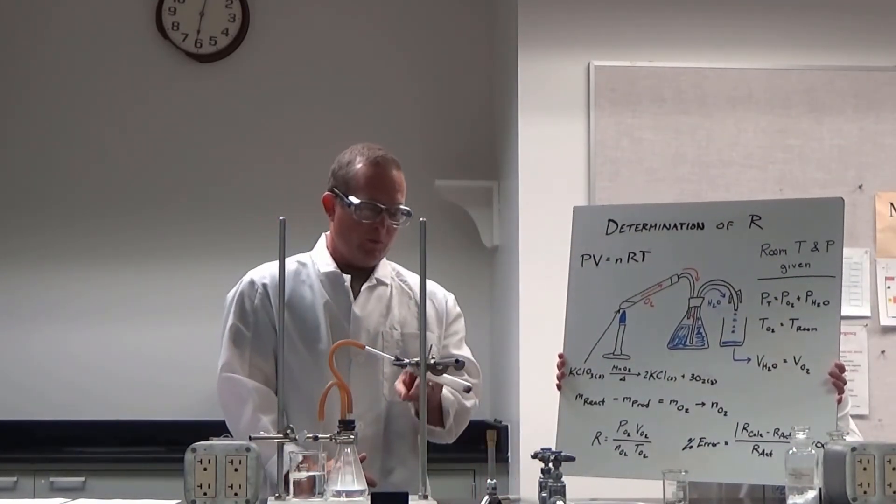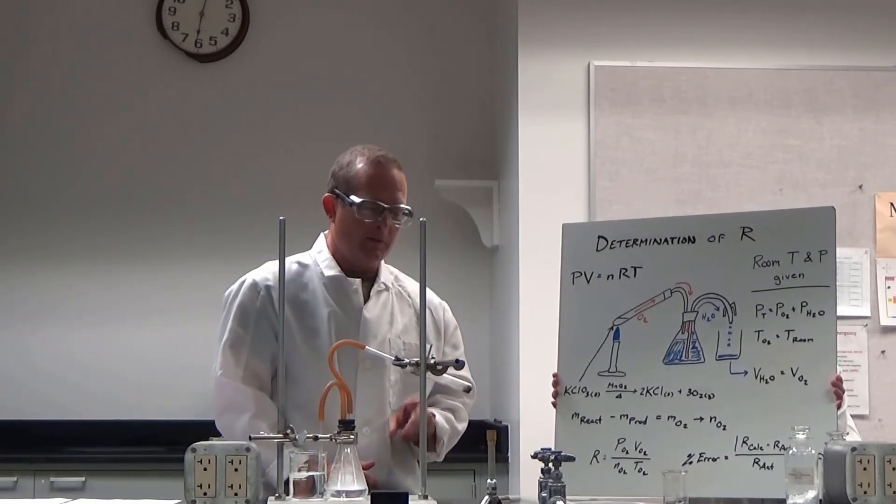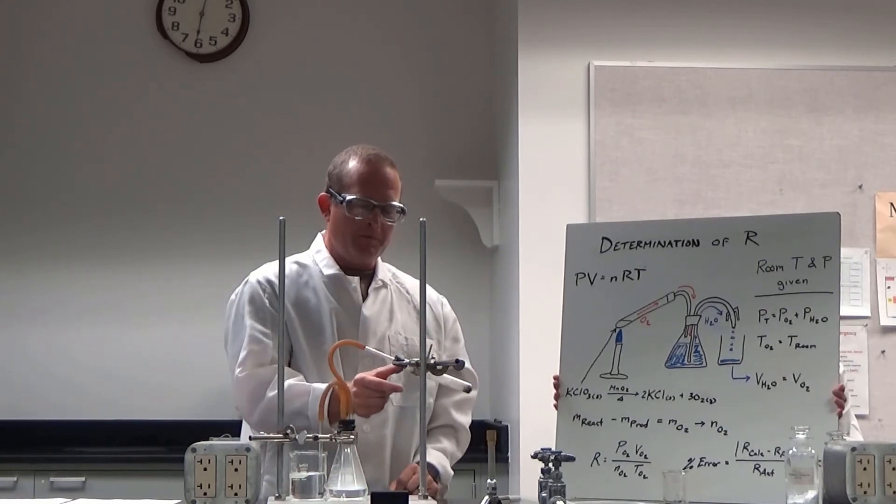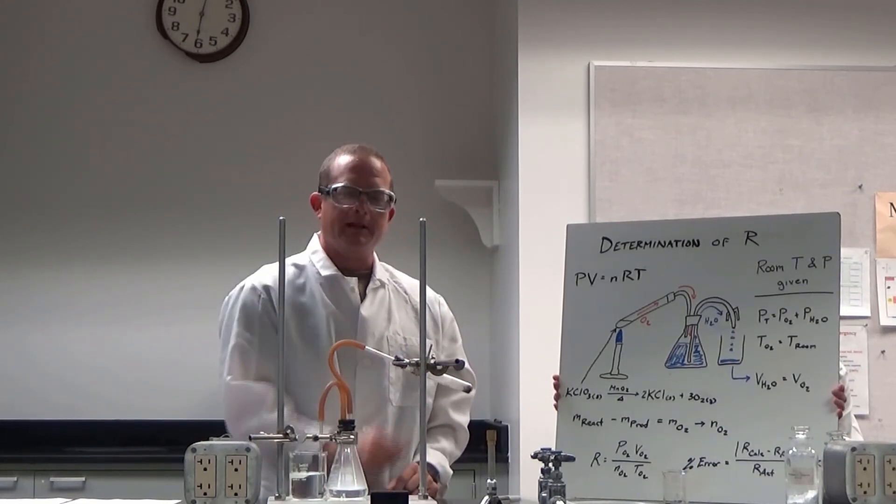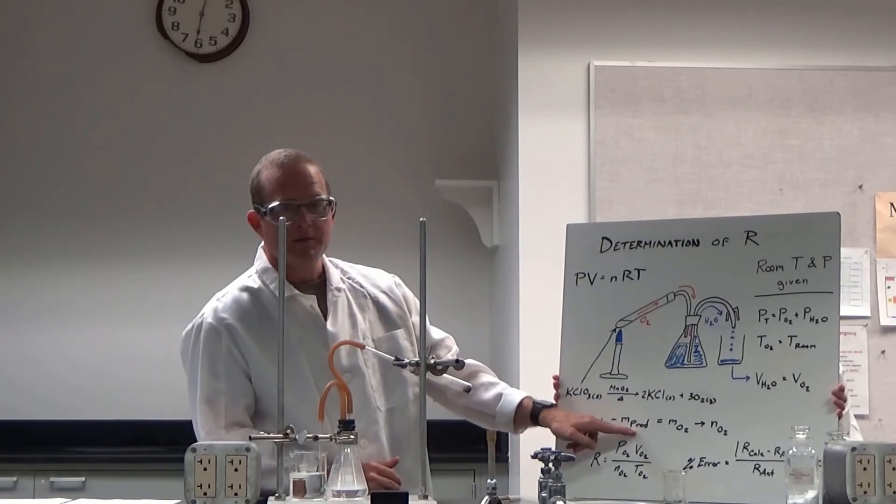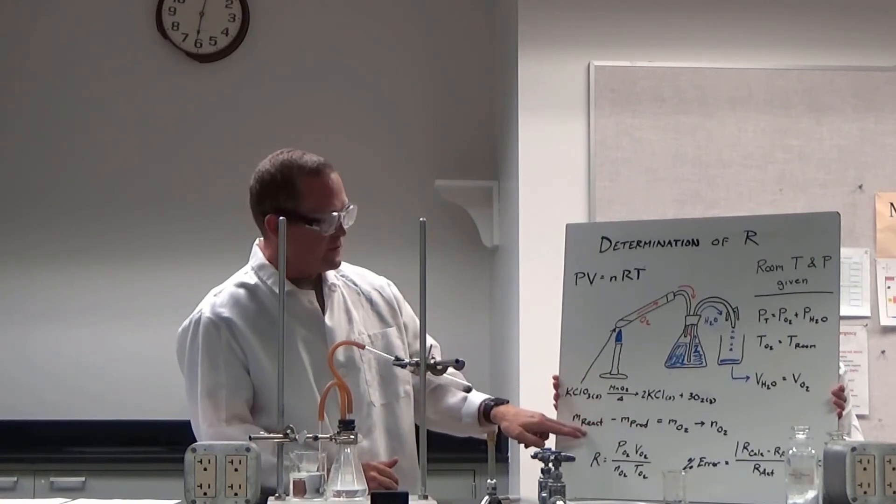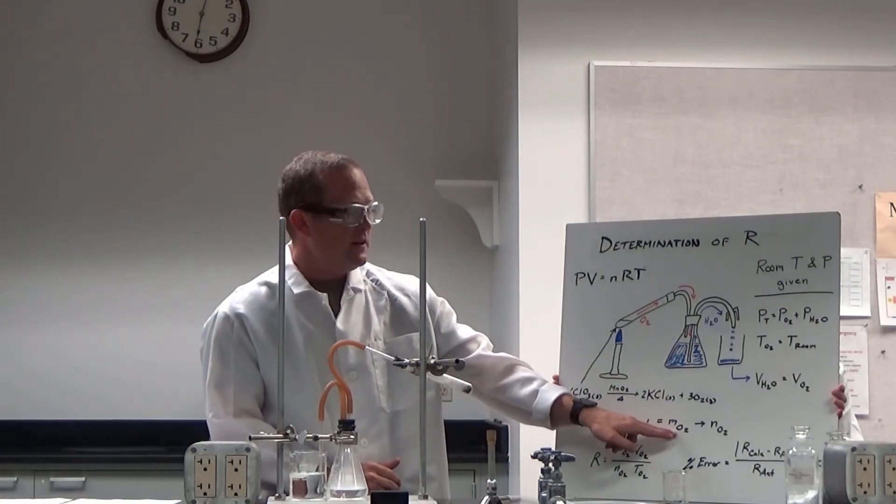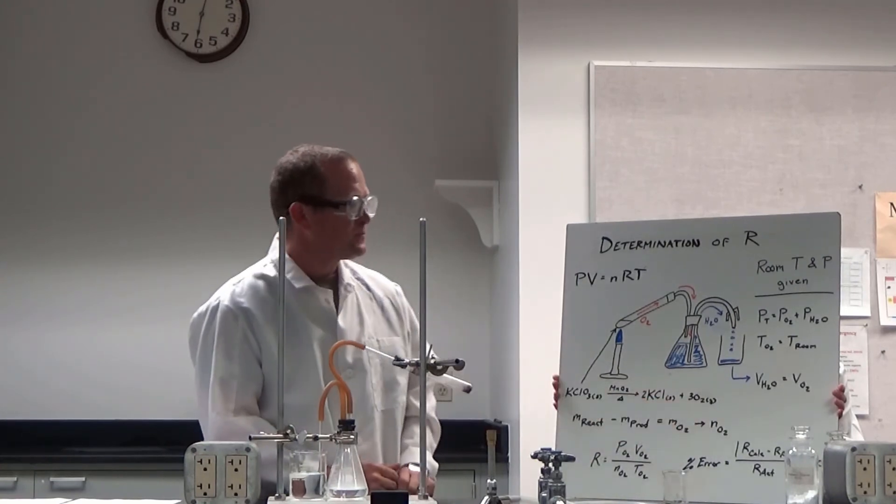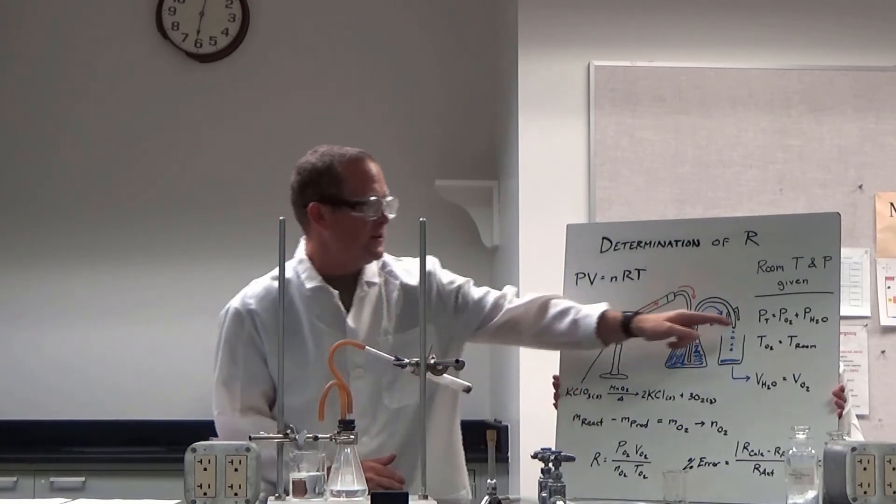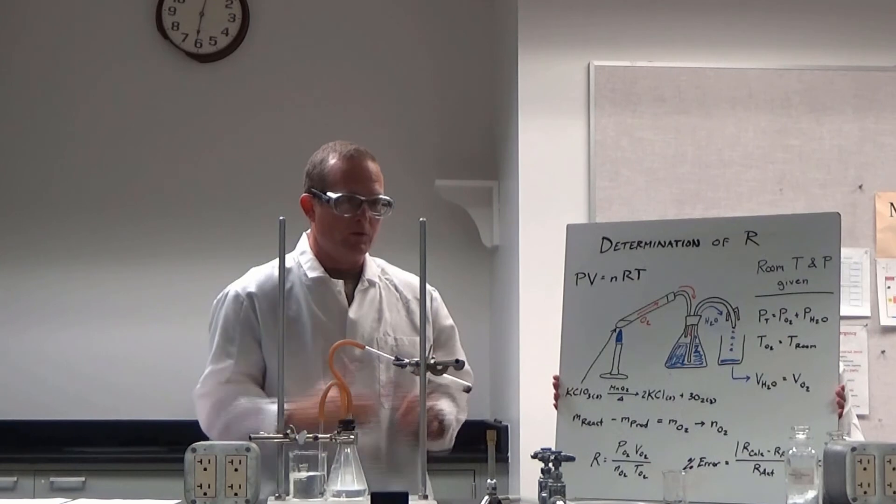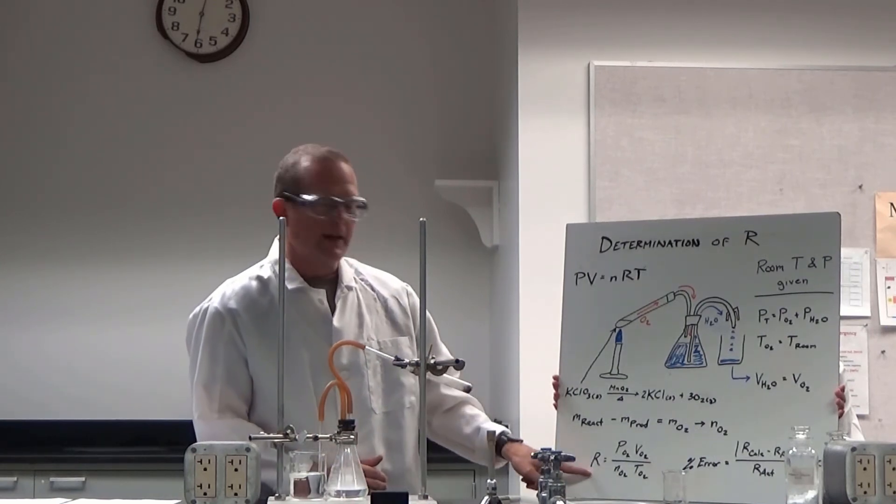We need to wait until this tube is cooled, of course, because remember hot glass looks the same as cold glass. So once that's cooled, we can go ahead and take the mass of the ignition tube again. Now we're taking the mass of the products. So subtracting the mass of the products from the mass of the reactants will give us the mass of the oxygen gas. Again, through the molecular weight, we can determine the moles of the oxygen by knowing the temperature and pressure that are the room temperature and pressure today. We can determine the gas constant.